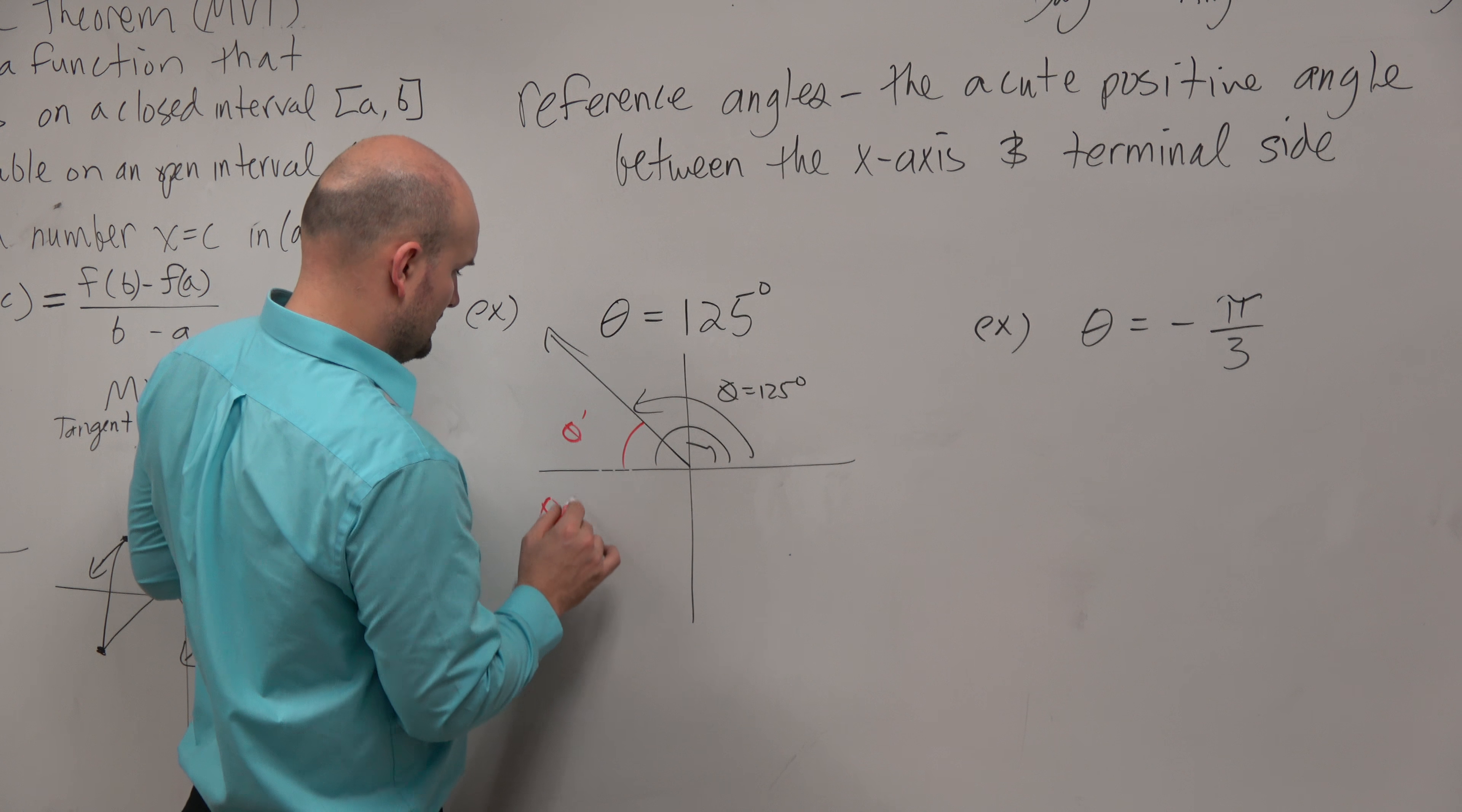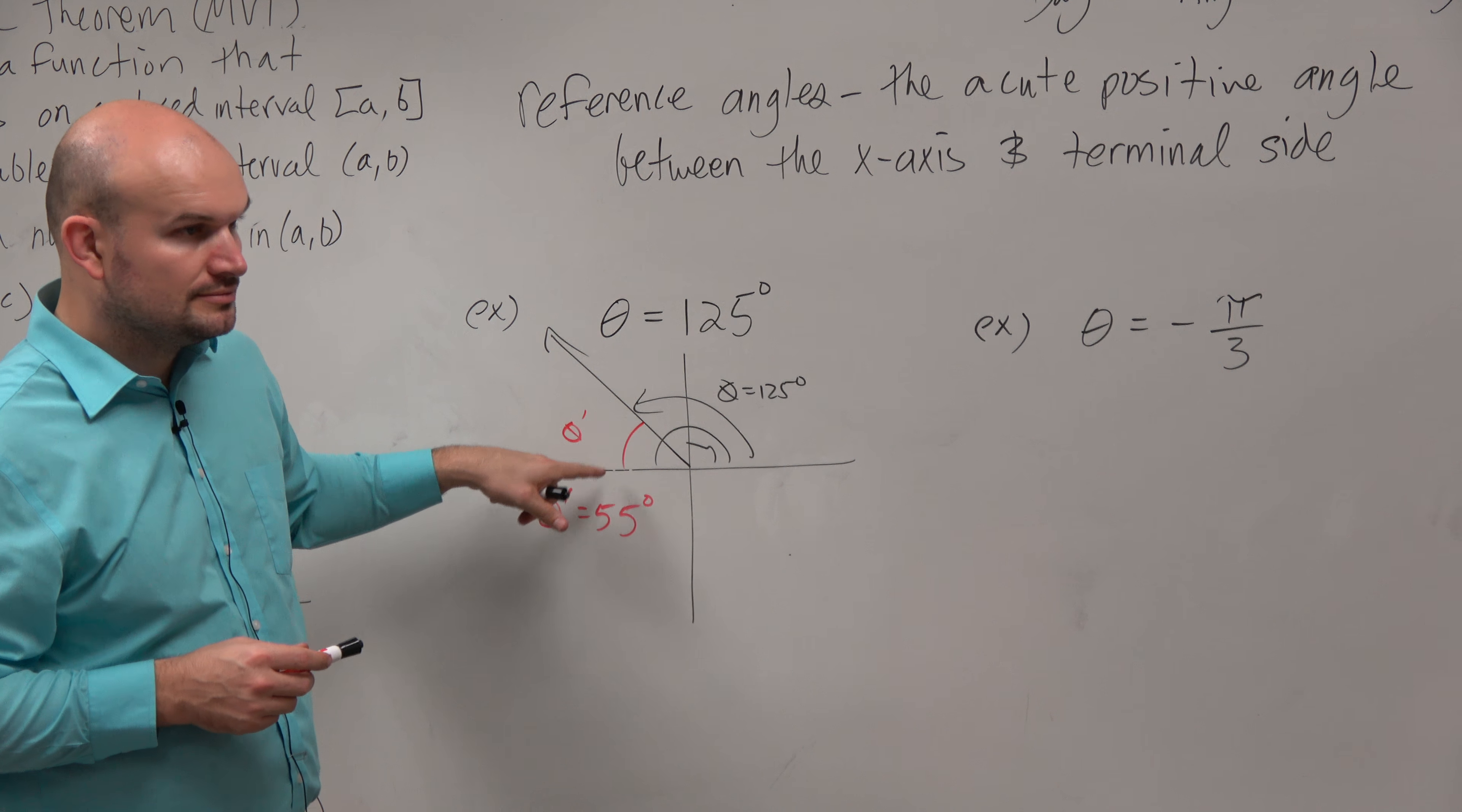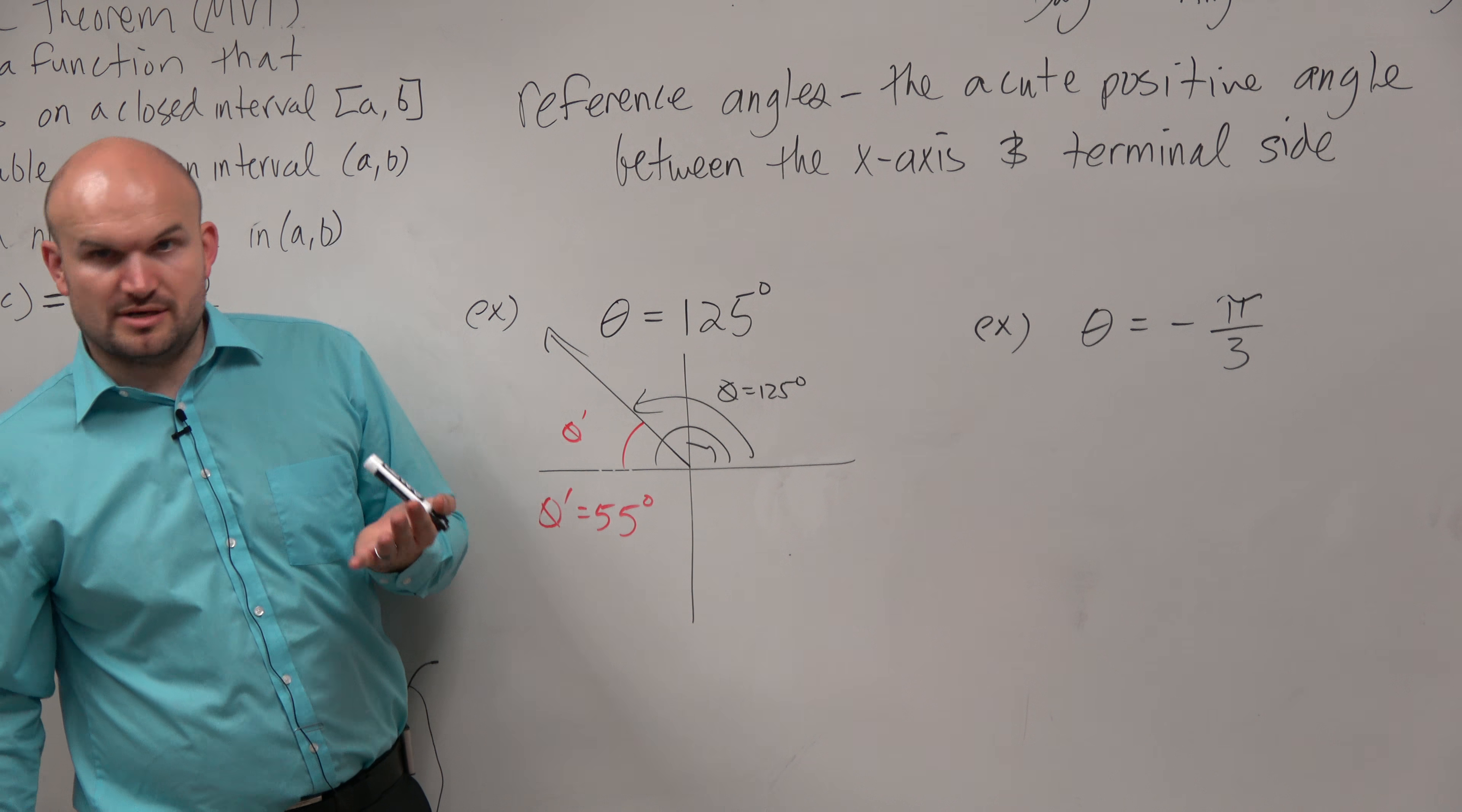Wait, what did you say? Theta prime equals 55 degrees. Okay, so then how far do you have to go from here to here? It should be 55 degrees. Oh, from 125 to 180. So it's going to be 50 degrees. Is everybody, yes?